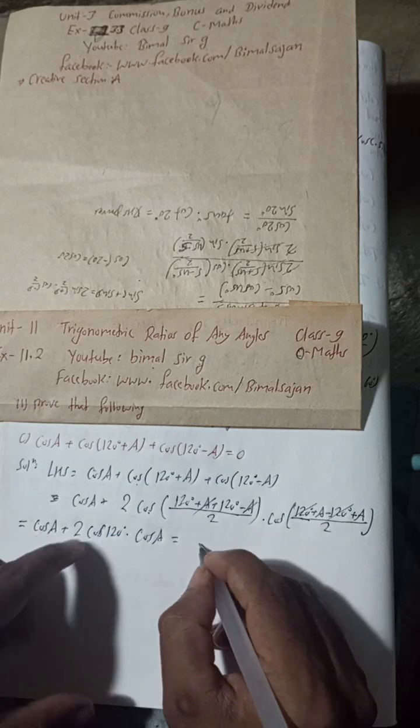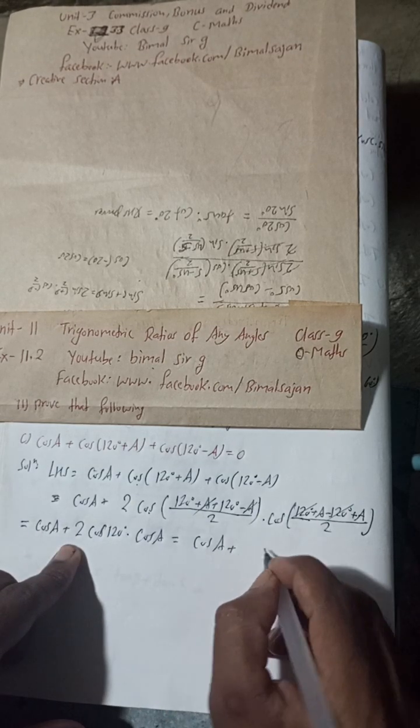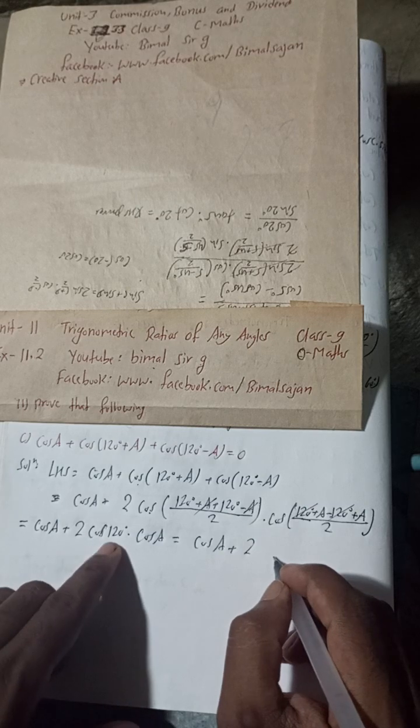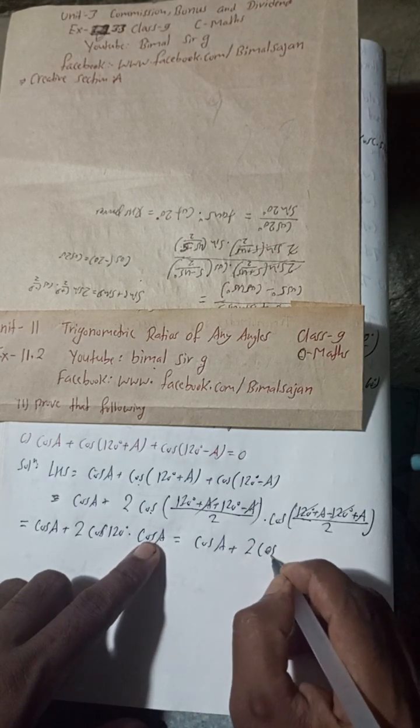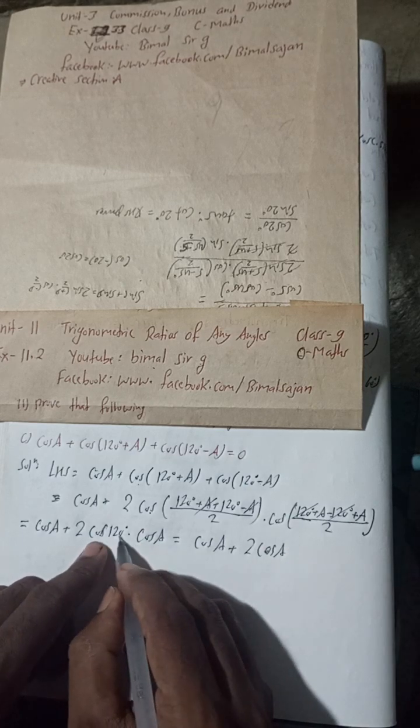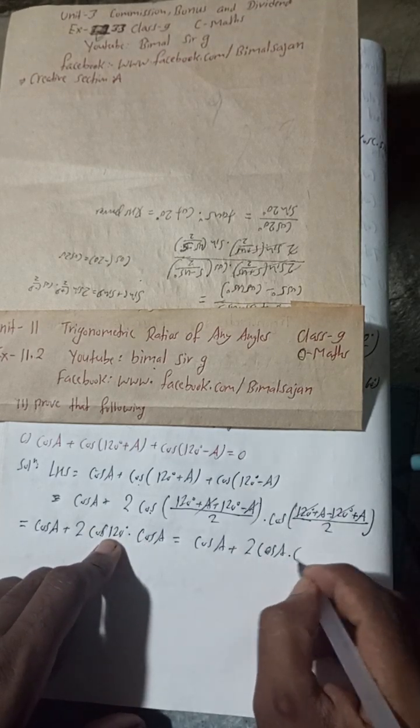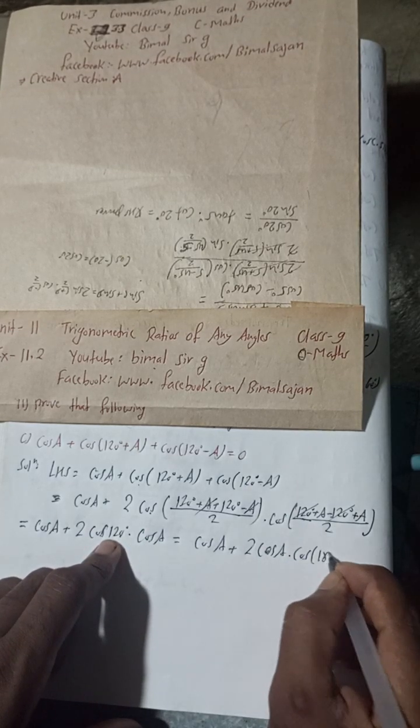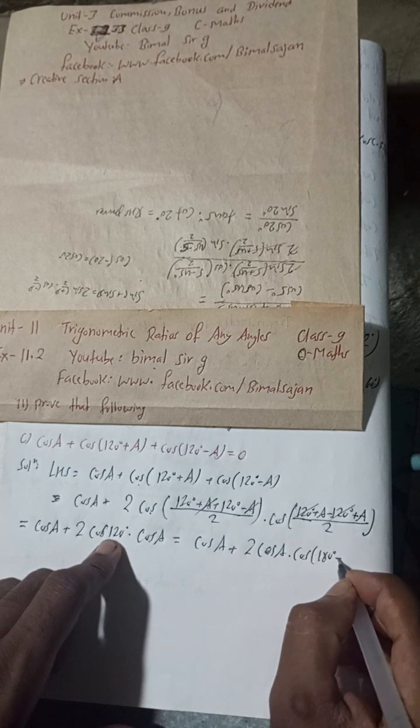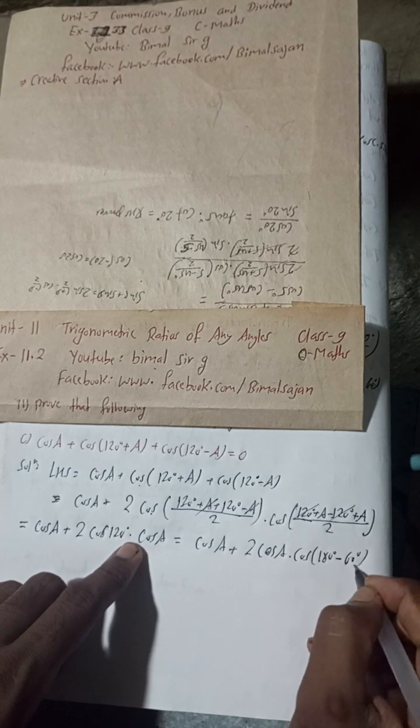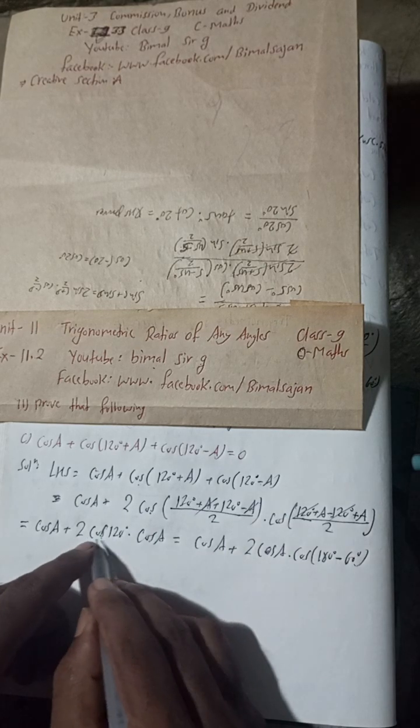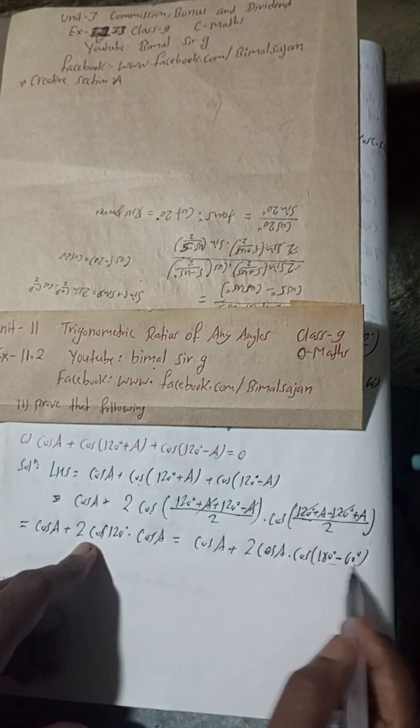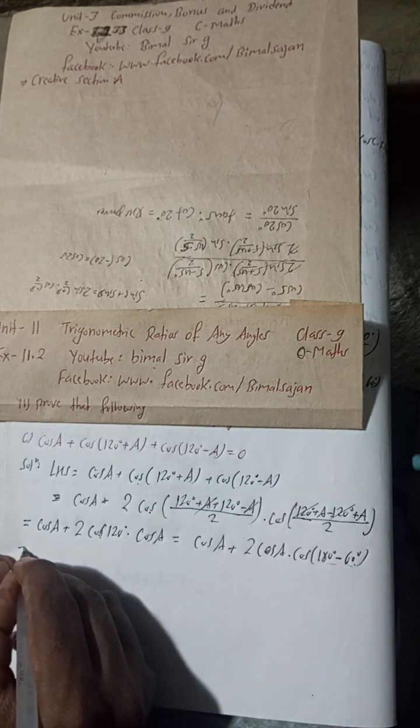Is equal to, now this is here, Cos A plus 2 and this is 2. This is Cos A right here. Cos A. 2 Cos A. And now this Cos 120 degree can be written as what? Cos 180 degree minus 60 degree. Cos means Cos 180 minus 60 is 120 only. So there is no change. If we add this.